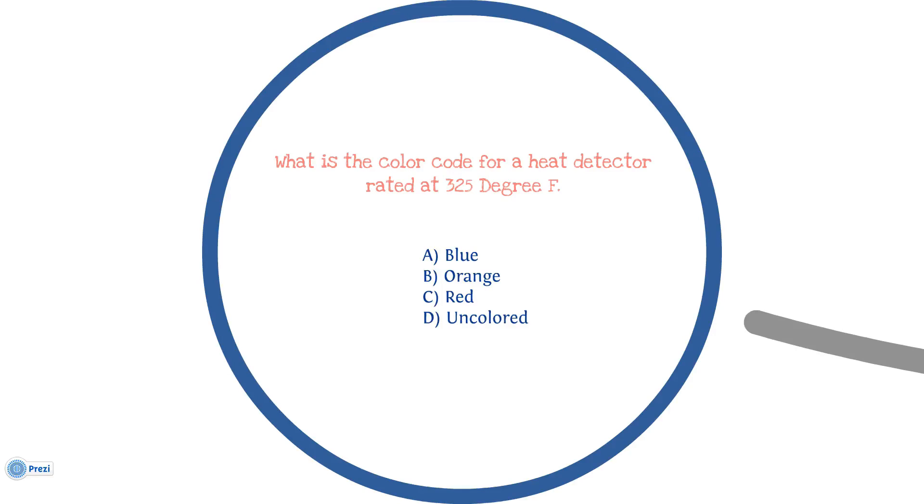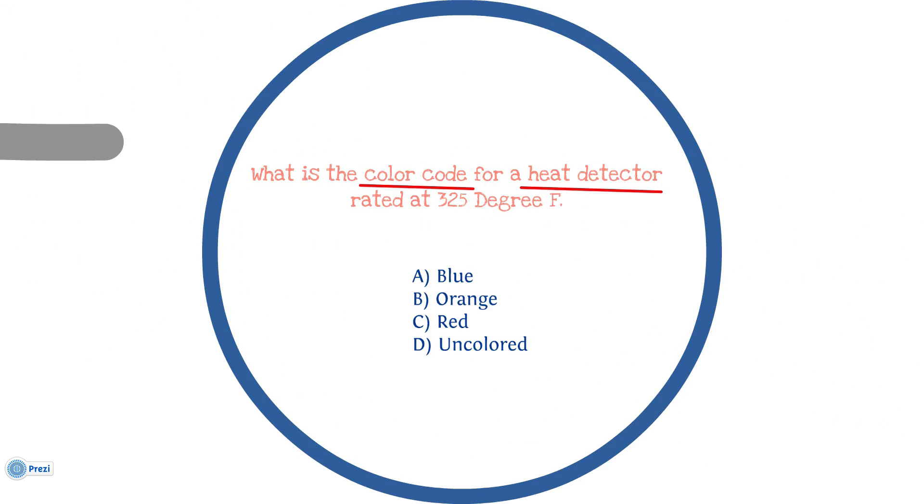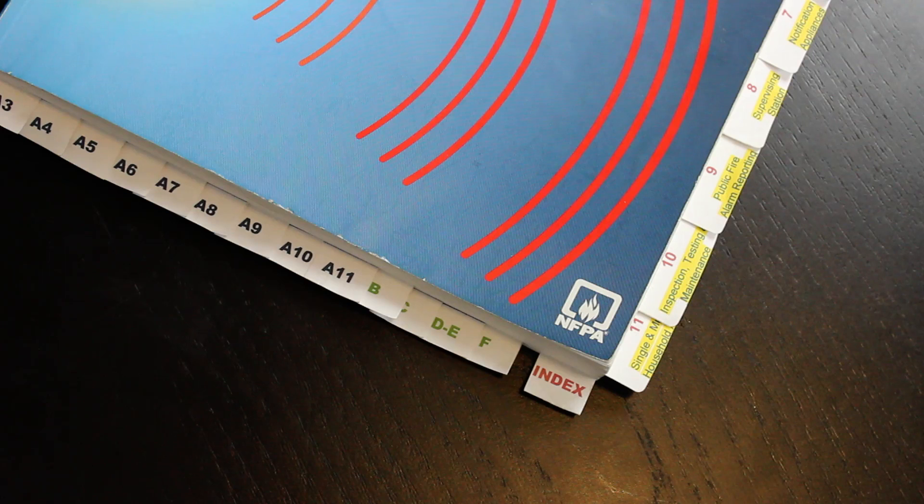Each question should have a few keywords on it—one or more keywords. By keywords, I mean the important words that will lead you to the answer. In this example, the important words, the keywords I found, are heat detector and color code.